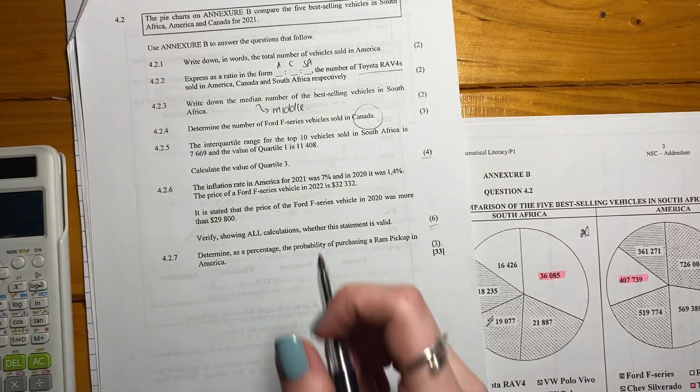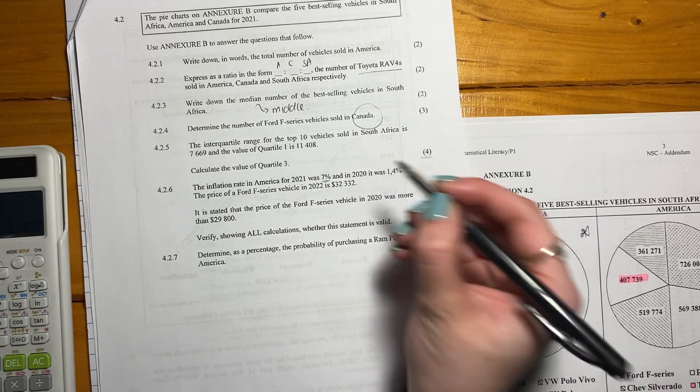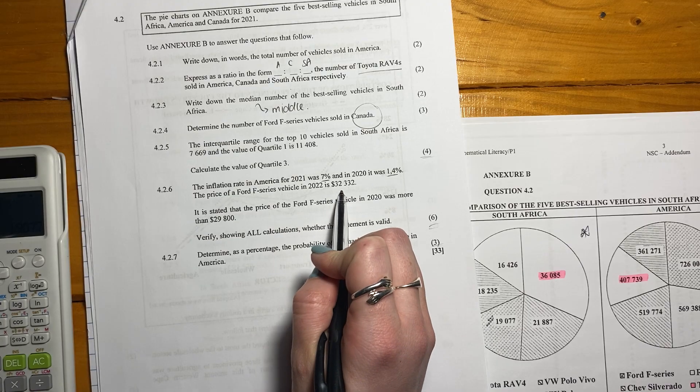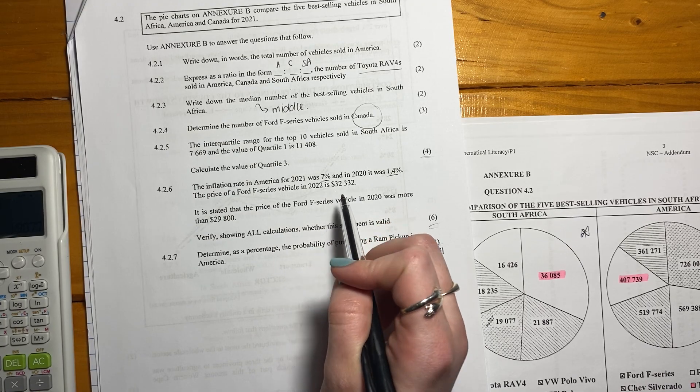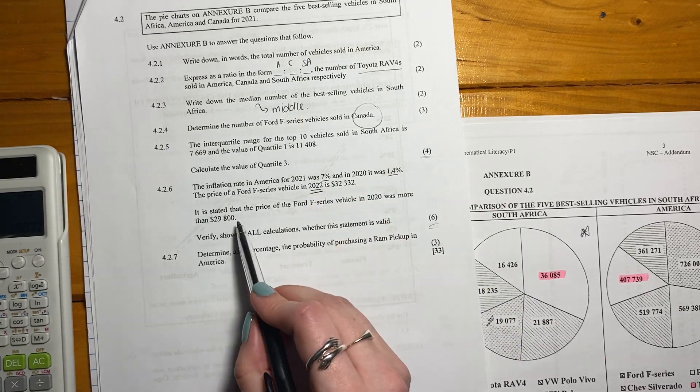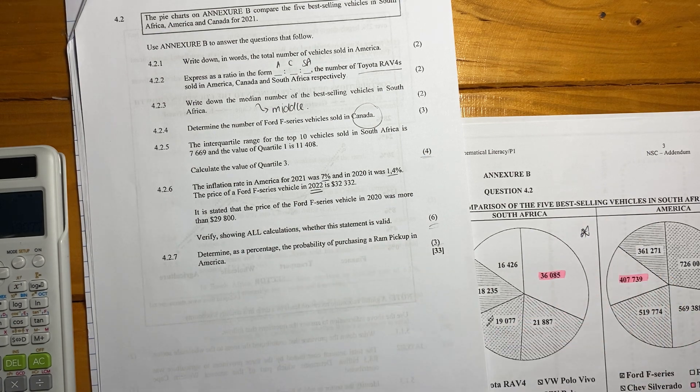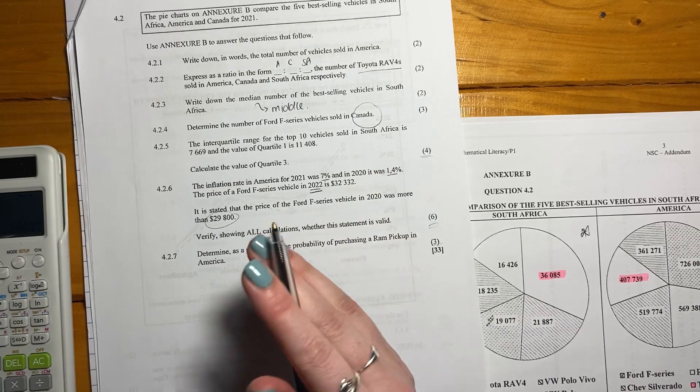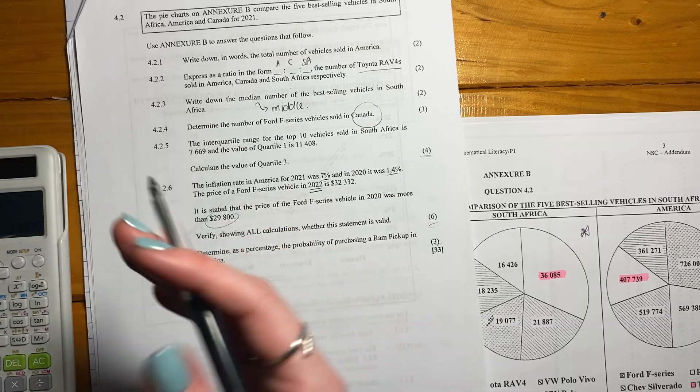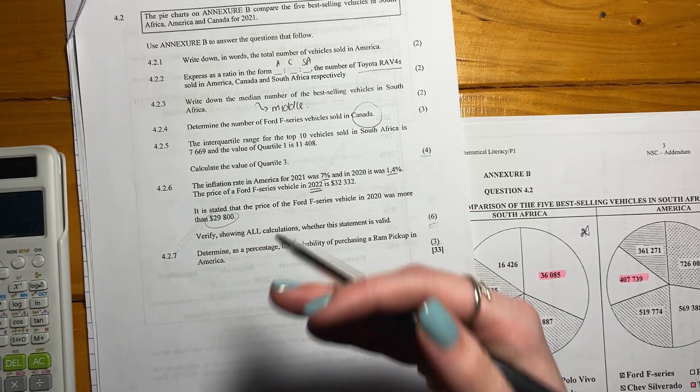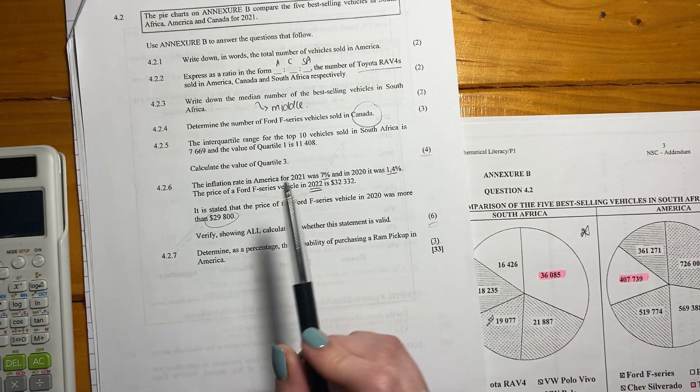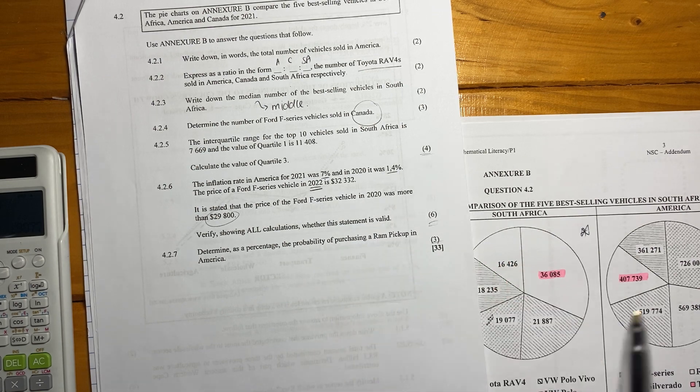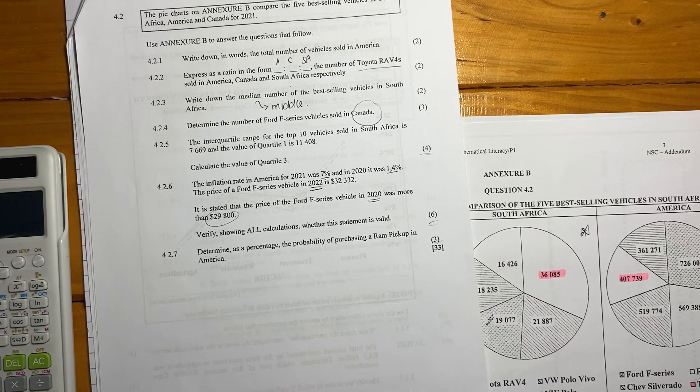Let's go onto the next question. The inflation rates in America for 2021 were 7%, and in 2020, it was 1.4%. That was our big COVID year. The price of the Ford F series vehicle in 2022 is $32,332. Then the question says, it is stated that the price of the Ford F series vehicle in 2020 was more than this amount. Verify showing all calculations, whether the statement is valid. What's important here is that at the end of your answer, you have to say, is it valid or is it not? You can't just do calculations and leave it at that. So what we have to do is we have to go from this $32,332 and we have to strip out the inflation for 2021 and 2020 to get us this amount here.